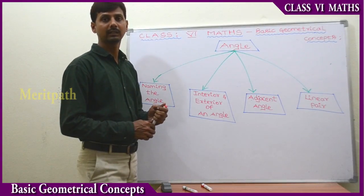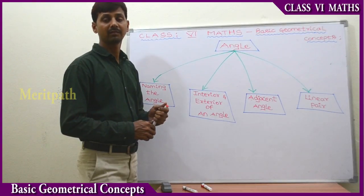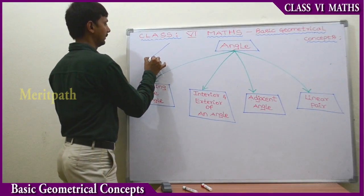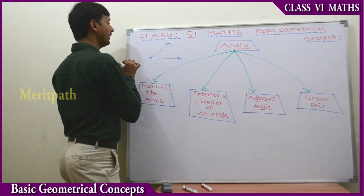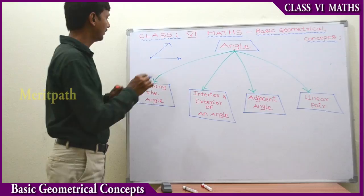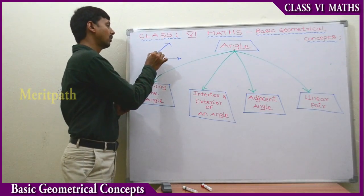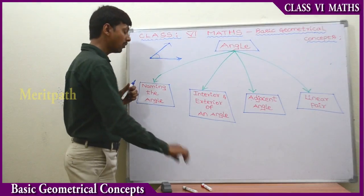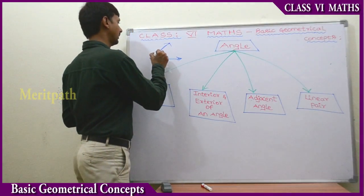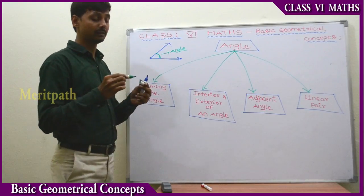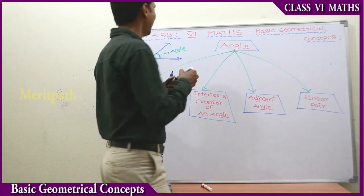The joining of two rays with a common point is called an angle — it forms an angle. This is the joining of two rays with a common point and it forms an angle. This is called an angle. Two rays will make an angle.